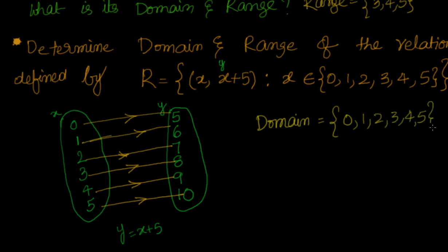So that is nothing but the domain of this. Now what is range? Range means all the elements from the second set. Domain means all the elements from the first set.